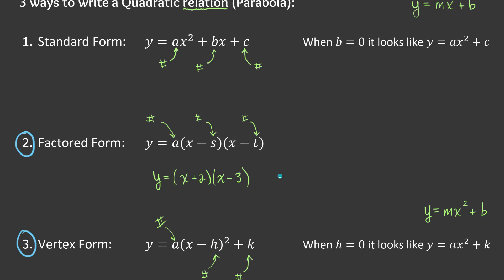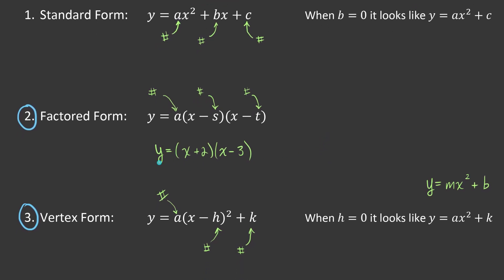When the h value is zero it looks like ax squared plus k, which looks a lot like the equation of a line with x squared. Standard form is not so easy to graph directly, but factored form and vertex form — I should be able to take those equations and graph them without making a table of values. That'll be in my future videos, part two and part three of graphing quadratics.